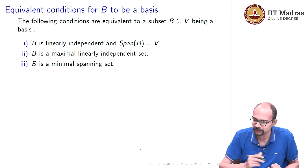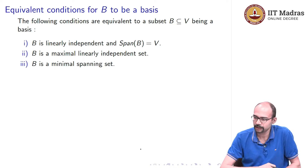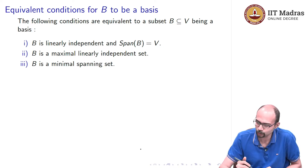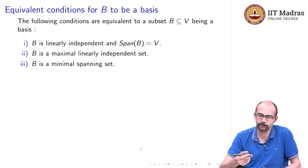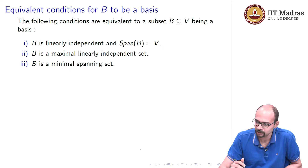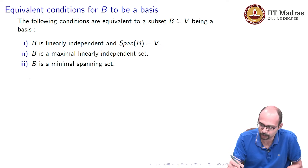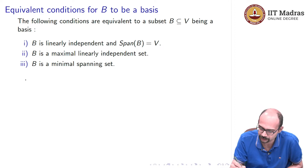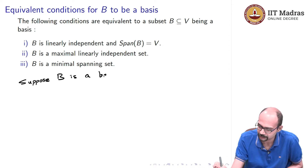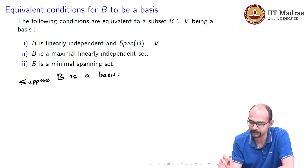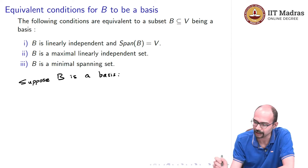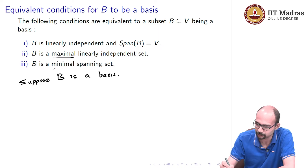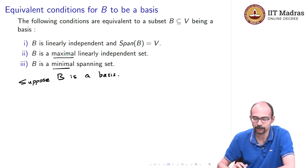Let us quickly see why these are equivalent. The first one is just the definition of a basis. Let us look at why the second and the first are the same. Suppose B is a basis — let me say why it is a maximal linearly independent set. Before that, let me first explain these terms: what is a maximal linearly independent set and what is a minimal spanning set?